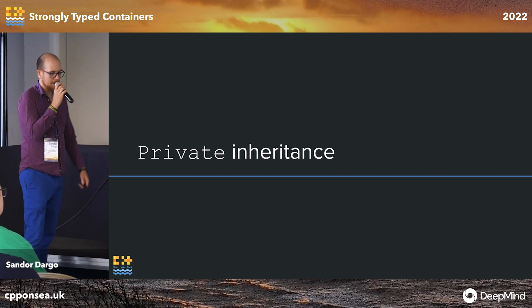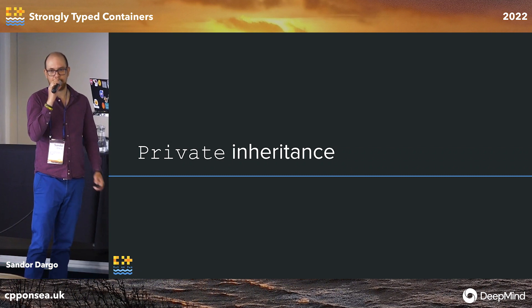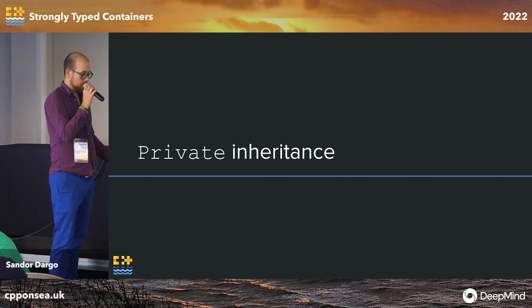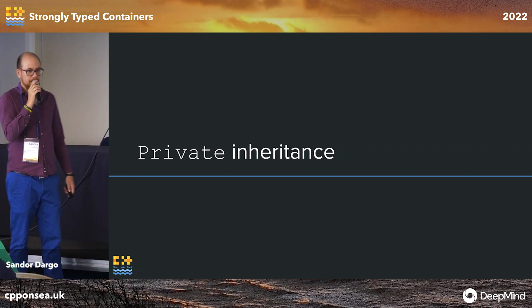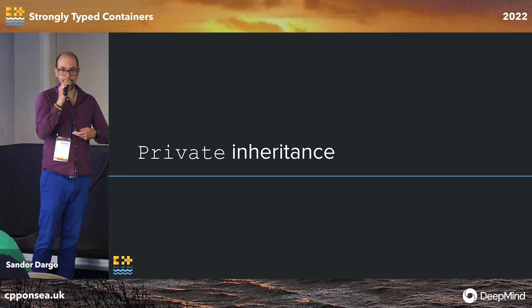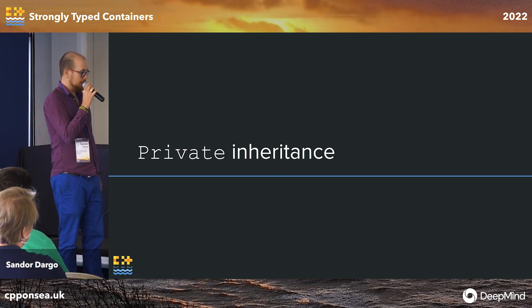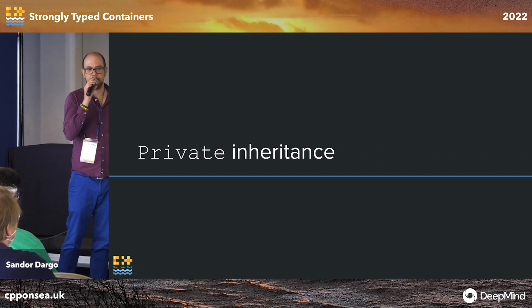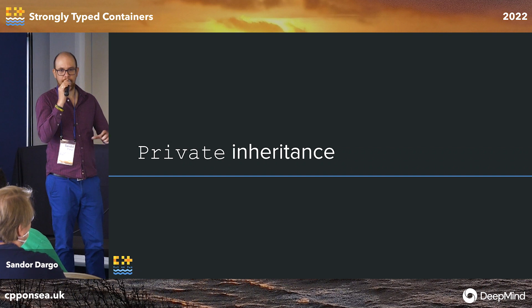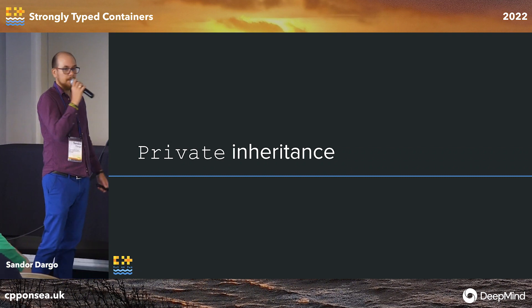The question was also raised: when we inherit publicly from the standard vector, you inherit the different operators, and they might be misused if you have two types inheriting from the same base container. That's partly something we're going to discuss in the coming slides — when you inherit publicly, you inherit everything. You give users a very huge API, which is often not what you want. You want to limit what they can use and how.